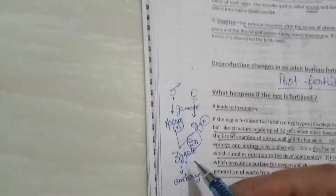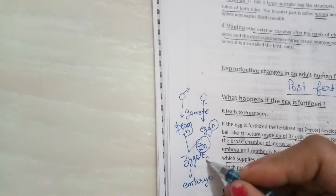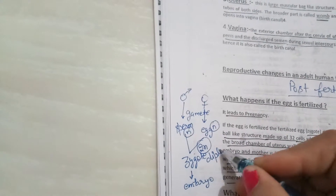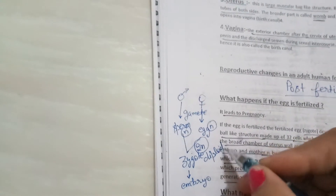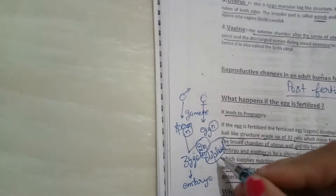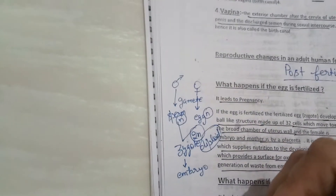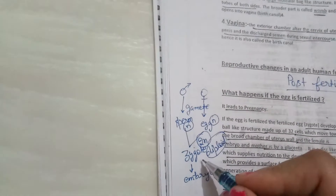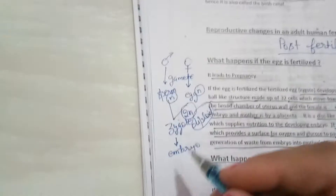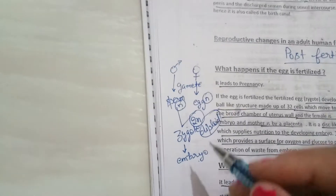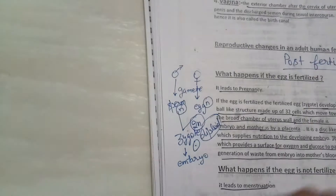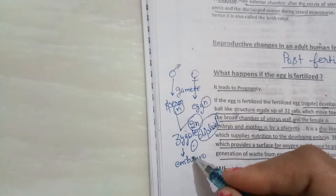When it comes to the 2N condition, we call it the diploid condition. So the zygote was diploid when it was a single cell. Then when it comes to the embryo, it was a single cell, then it became two cells.